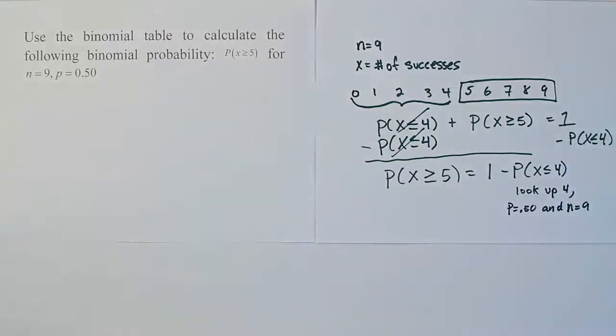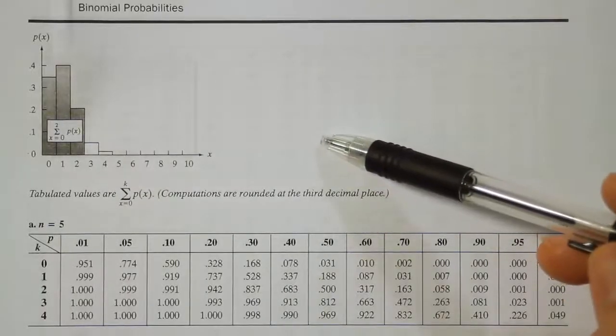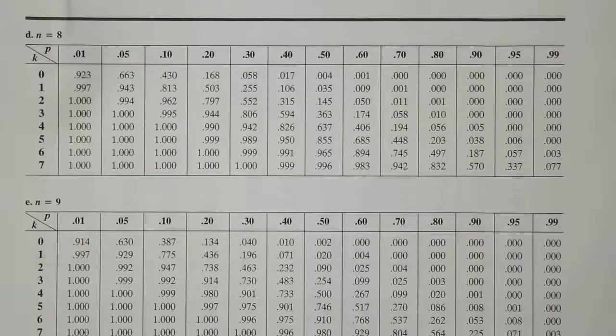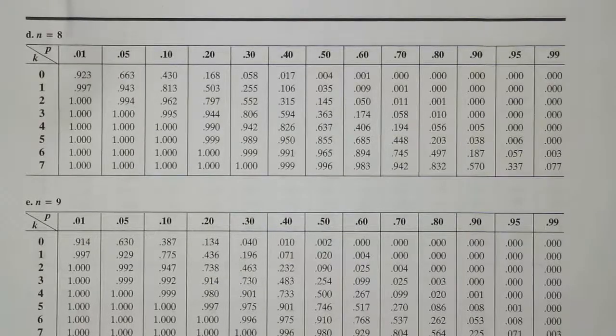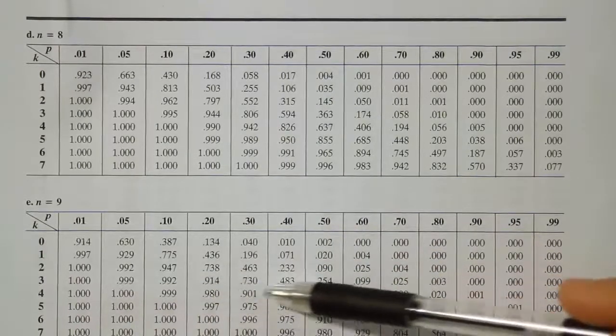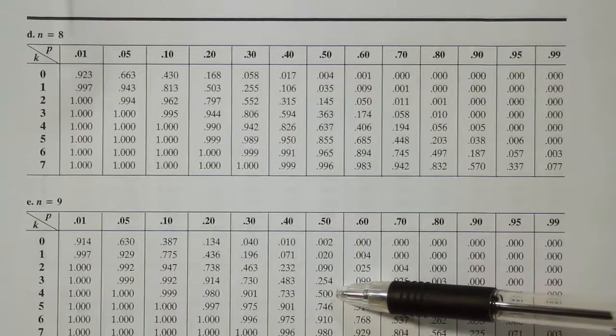Okay, so we're on the binomial table and we want to go to where it says n equals 9. We're going to move down a couple pages here. There we have n equals 9 and we're looking for the probability to be 0.5 and we want our k value to be 4. So we need this value at k=4 in the 0.5 column and we get the answer 0.500.